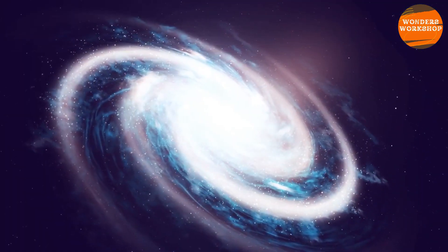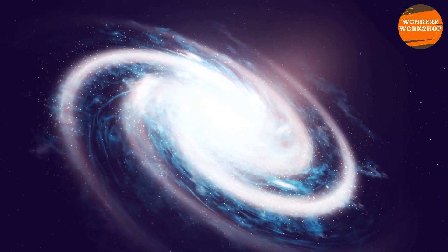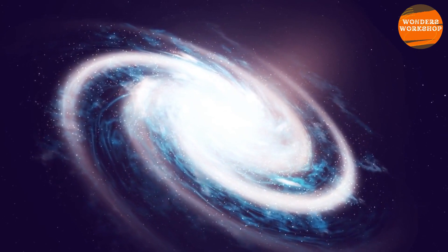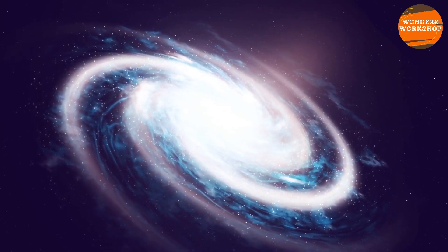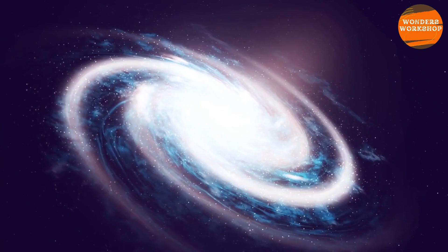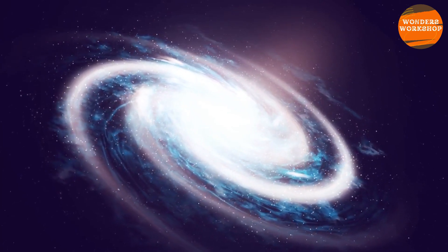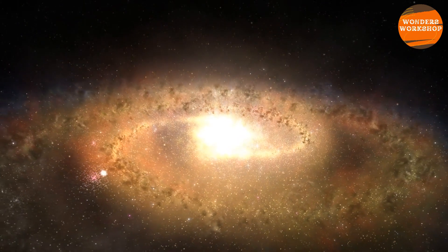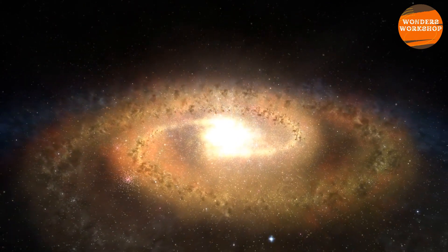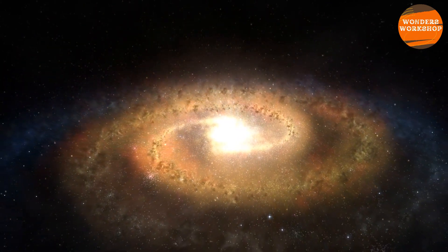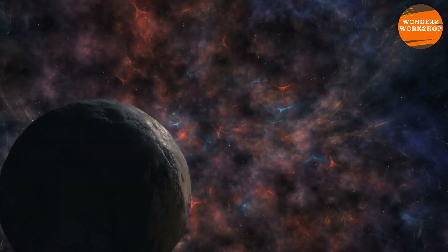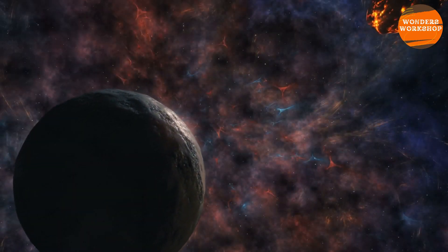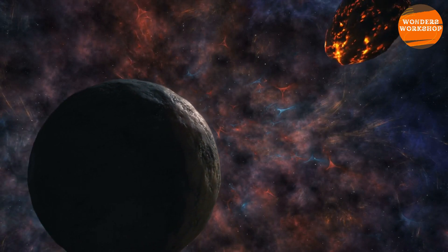However, what makes the Great Attractor special is its location. It is situated in a part of the sky almost completely obscured by the Milky Way, making it difficult to study with traditional telescopes. The Zone of Galactic Obscuration is a region of the Milky Way so dense with stars, dust, and gas that light from beyond this region cannot easily reach us. This has made it particularly difficult for astronomers to understand what lies there.